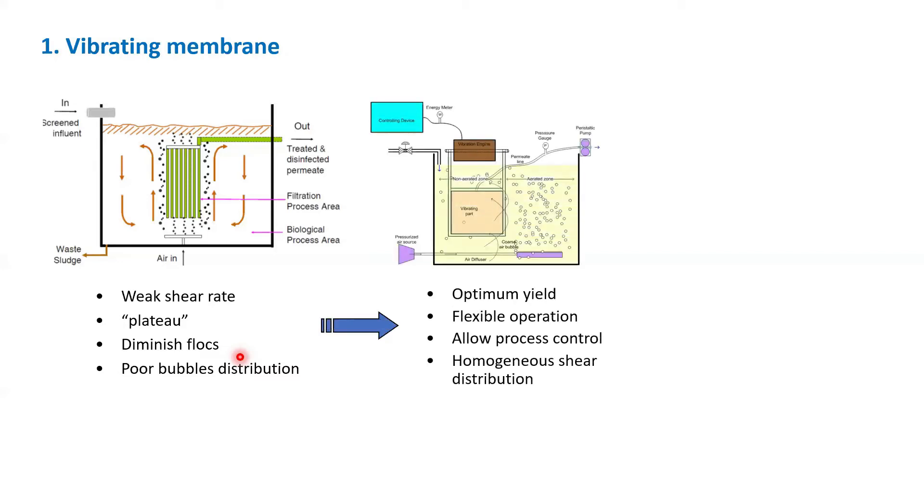What I did in my study was, instead of using the extensive aeration, why don't we just vibrate the membrane? We can then optimize the yield of energy on the membrane surface. It is flexible, which means that we can vibrate it when required, because this is an electricity-driven vibration. It's low process control. You can change the vibrating parameters like amplitudes, the frequency, and so on. In demand, if you have a very bad situation where the fouling is very high, you can then manipulate the vibrating parameters.